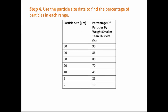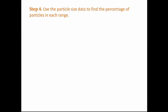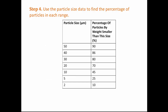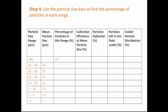We need to use the data from the question to find the percentage of particles in each range. The first row of the data table tells us that 90% of particles are smaller than 50 micrometres. From this, we can deduce that 10% of particles are bigger than 50 micrometres and we fill that in. The table tells us that 90% are smaller than 50 micrometres and 86% are smaller than 40 micrometres, meaning 4% of particles are between 40 and 50 micrometres. We fill this in and do the same for the rest of the column.